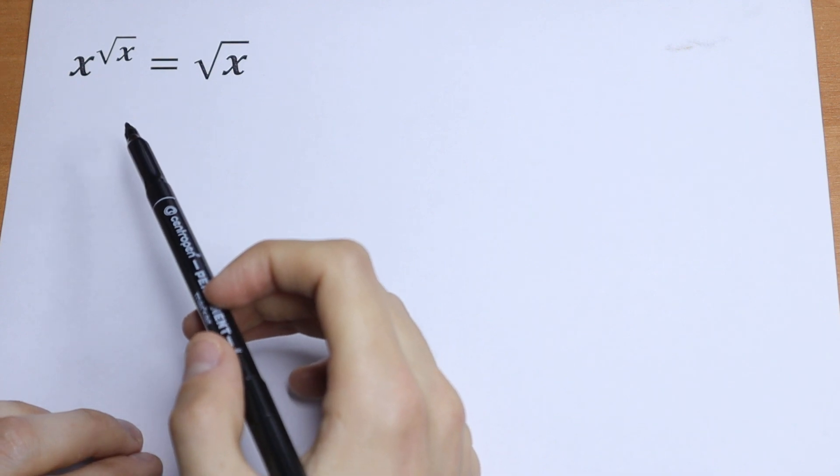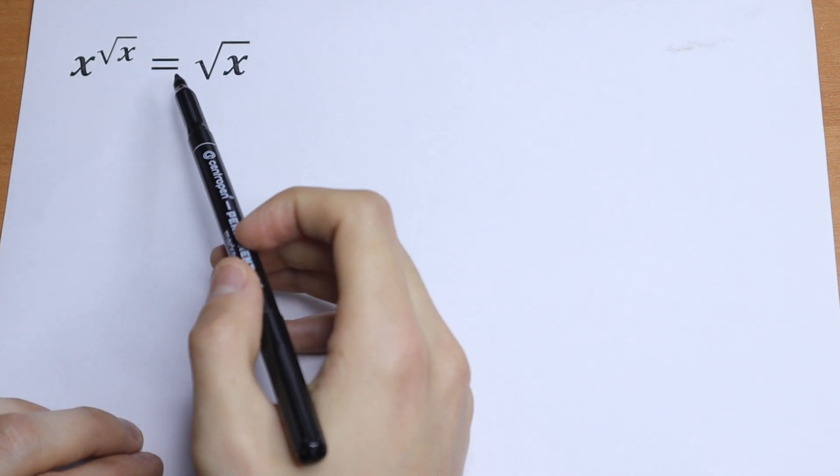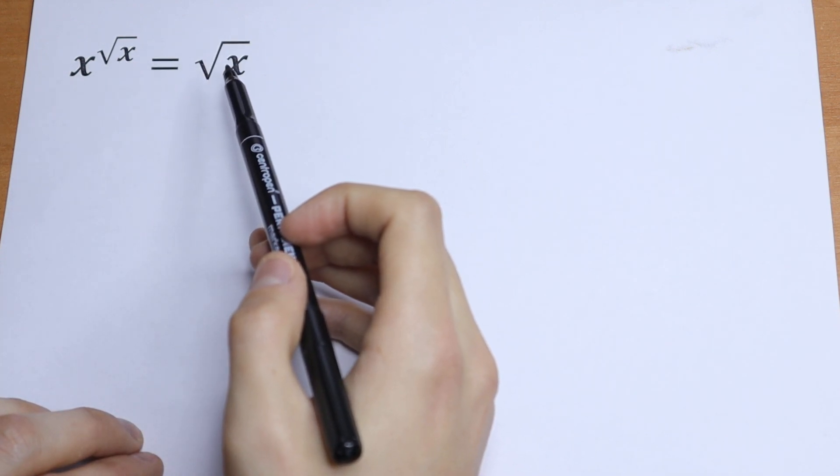Here we have an interesting exponential radical equation: x to the power square root of x equals square root of x.